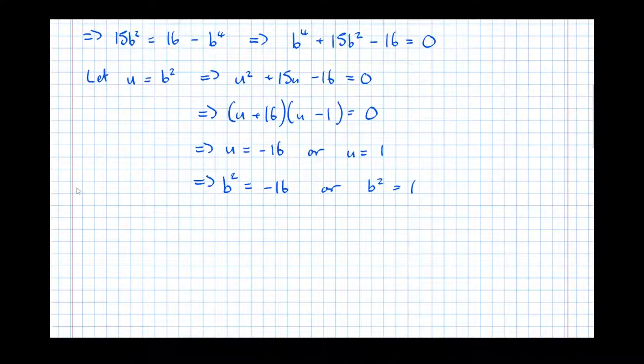This one here, we can discard. B squared equals minus 16 will give a complex value for b or an imaginary value for b, which isn't allowed. The coefficients of complex numbers have to be real. So that doesn't work. So as soon as we get an imaginary number as an answer or a complex number as a value for the coefficient, we can instantly discard it. Coefficients of complex numbers are real.